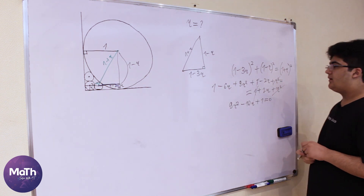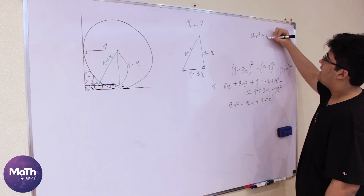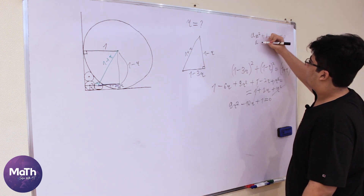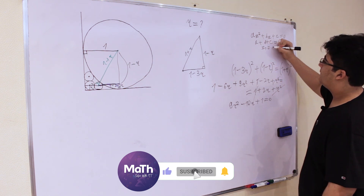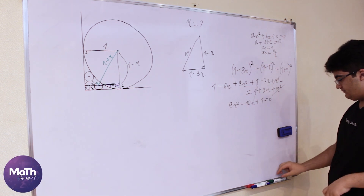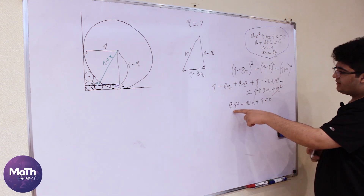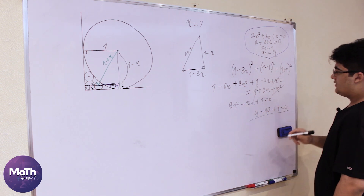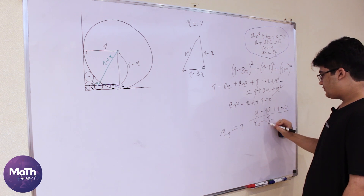Here we can use a very useful formula. Remember: for ax squared plus bx plus c equals 0, if a plus b plus c equals 0, then x₁ equals 1 and x₂ equals c divided by a. This is always true. Applying this here: 9 minus 10 plus 1 equals 0, so r₁ equals 1 and r₂ equals 1 divided by 9.